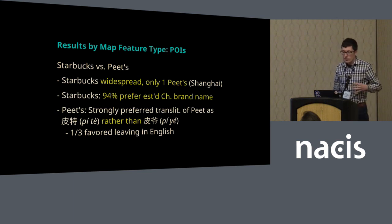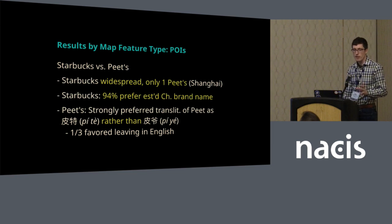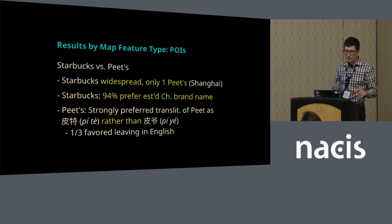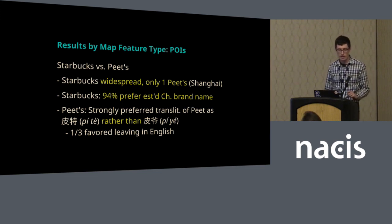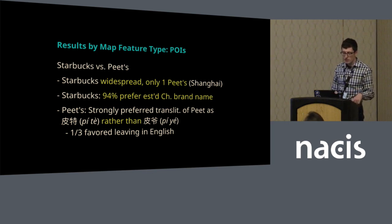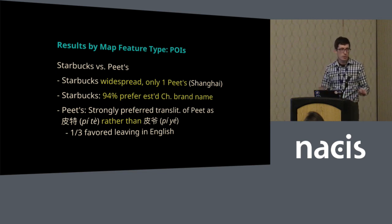One interesting thing when looking at POIs was the effect of an established brand name. I compared Starbucks versus Pete's, because Starbucks is widespread in China but Pete's only has one China location. Participants strongly preferred the established Chinese brand name for Starbucks — that's actually a mix of translation and transliteration. For Pete's, speakers preferred the transliteration of Pete as Pita rather than what I found on Wikipedia as presumably their preferred label conversion, which is Pia.